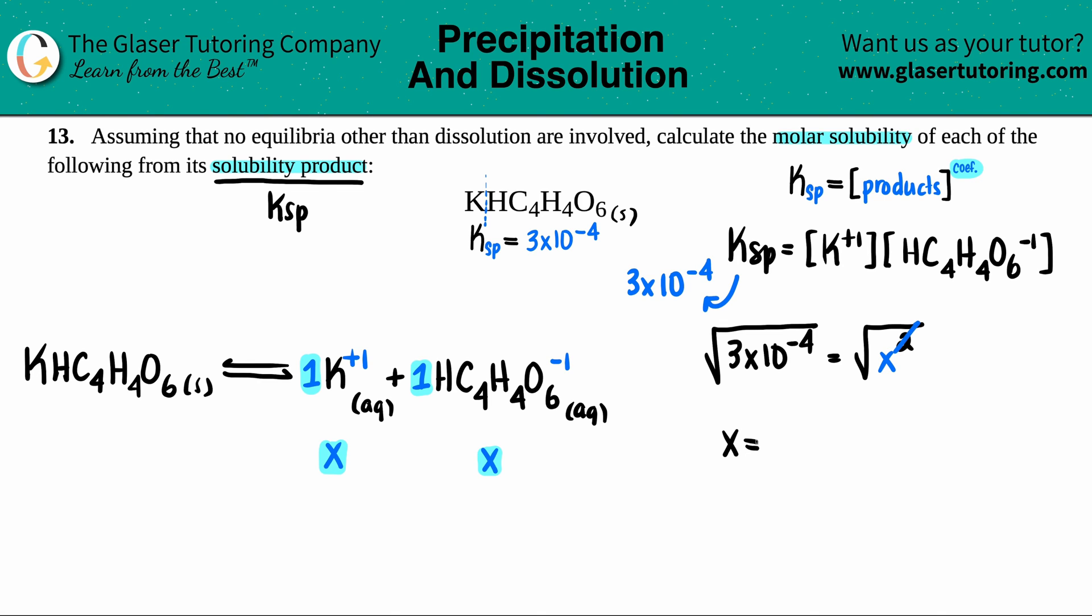This is great. You only got to do one piece of math here. Three times 10 to the negative fourth. And I don't know, maybe I'll give two sig figs. 0.017. And this is in molarity.